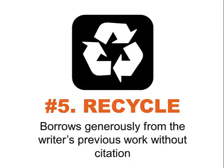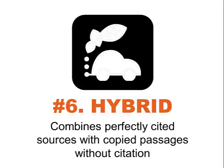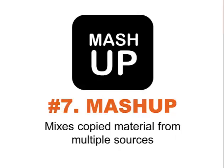Number five is recycle — this is when you borrow generously from the writer's previous work without citing it. Number six is the hybrid — this is when you combine perfectly cited sources with copied passages that you do not cite. Number seven is the mashup, which is when you mix copied material from multiple sources.